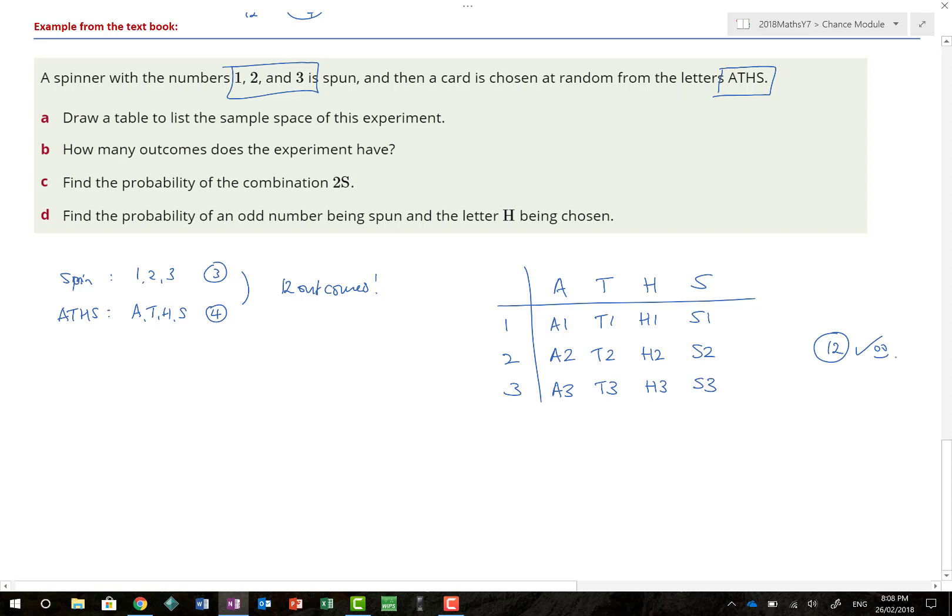And let's answer some questions. Draw a table to list the sample space of this experiment. Tick. Because the question says draw a table, that's what we have to do. If you just did the sample space with all the curly brackets, and did A1, T1, H1, S1, and carried on, sadly, that would be incorrect, because the question was specific. How many outcomes does the experiment have? Well, we can write that down straight away. 12. In fact, we didn't even need to draw the table to do that, because we have the information in the question.